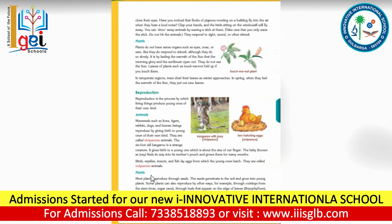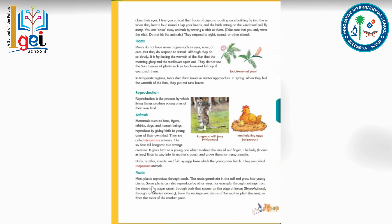Next, let's talk about plants. Most plants reproduce through seeds. The seeds germinate in the soil and grow into young plants. Some plants can also reproduce by their own way, for example through cuttings — such as the rose plant and sugar cane.